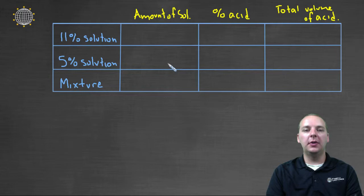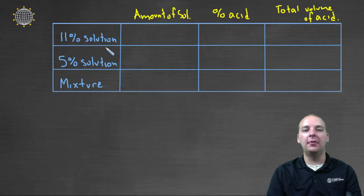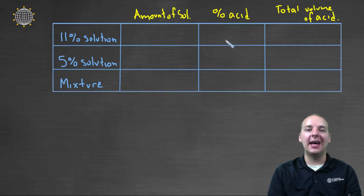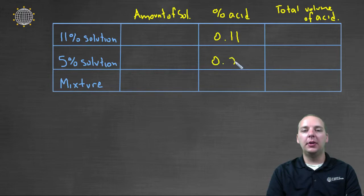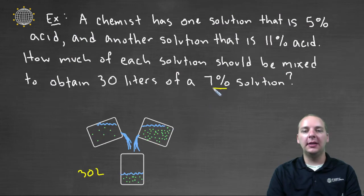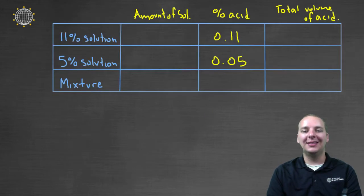Let's fill in the chart. The percent solution column is easy — that's a given. When they say eleven percent, they mean eleven percent of that solution is acid, so we'll have 0.11 and 0.05. And in the final mixture, the word problem says we wanted a seven percent acidic solution, so we'll have 0.07 for the mixture.